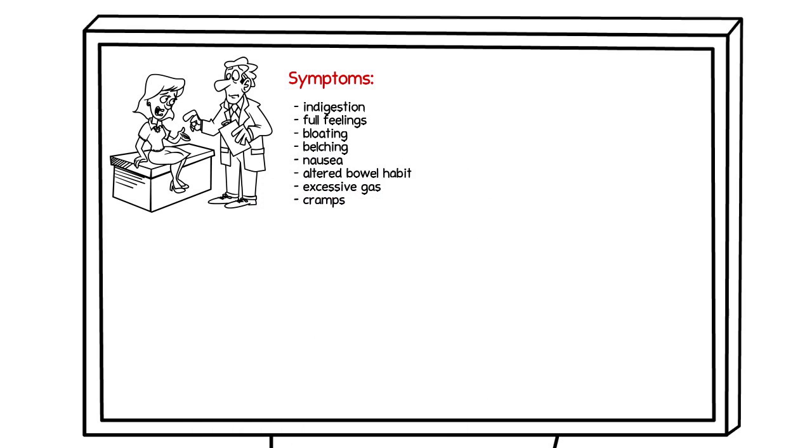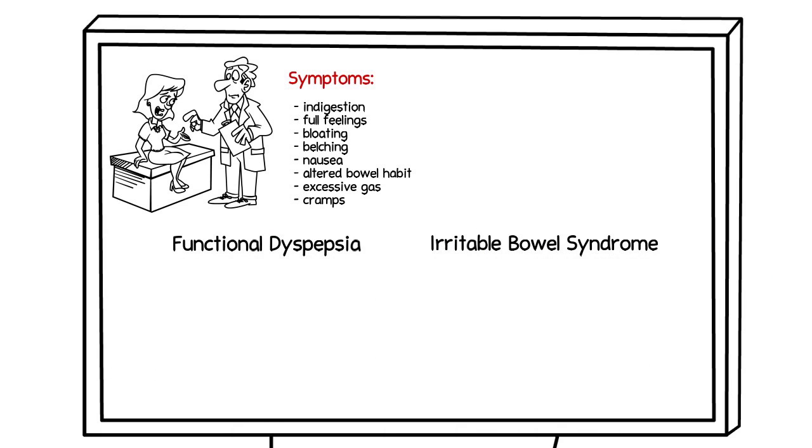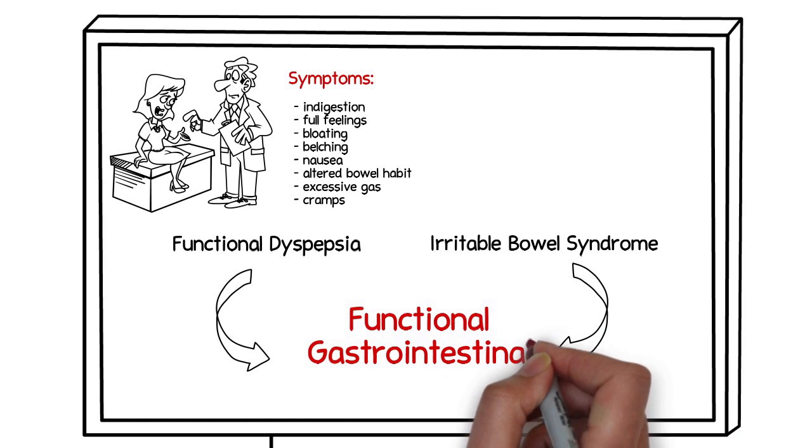When all the tests are normal, we make a diagnosis of functional dyspepsia or irritable bowel syndrome. And because of their similarities, we consider these two conditions together as the functional gastrointestinal disorders.